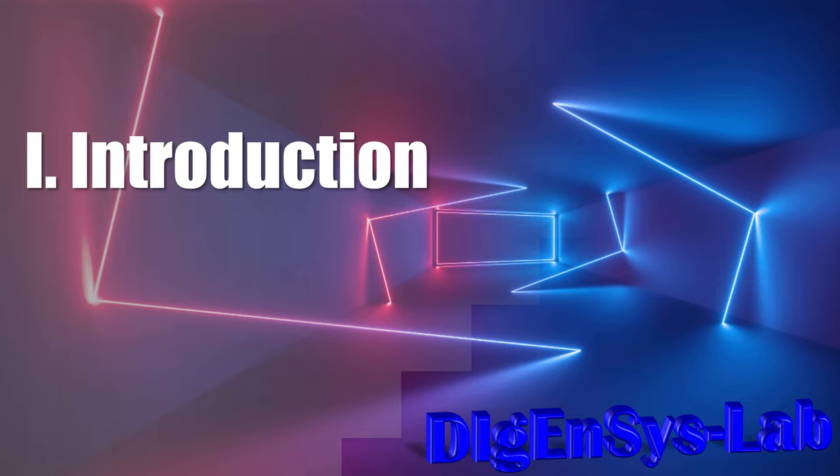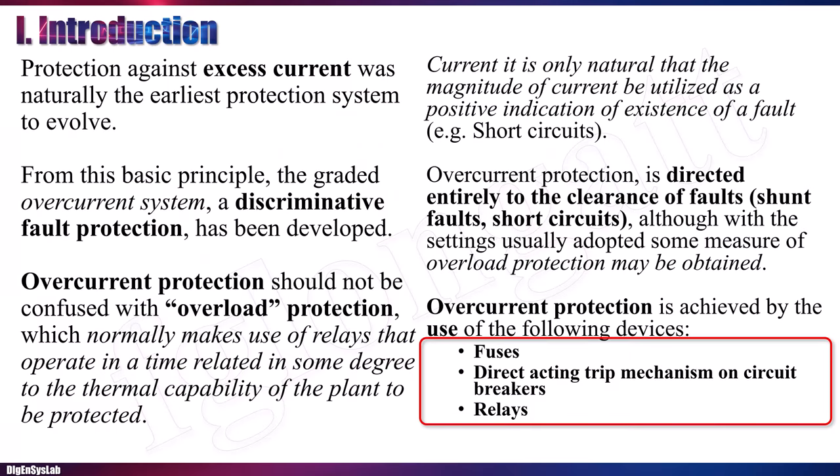The most used protection system is based on overcurrent. Protection against excess of current was naturally the earliest and oldest protection system. The principle is very simple because we use the magnitude of the current to create a difference between the normal condition and the fault condition. During normal conditions, the magnitude of the current is close to the nominal current of the conductor.